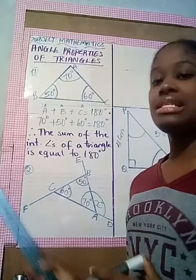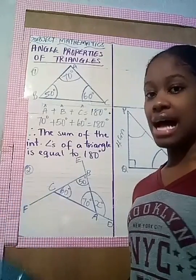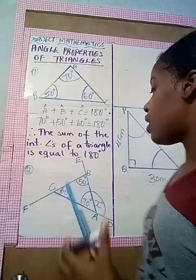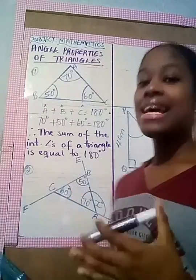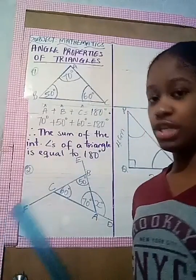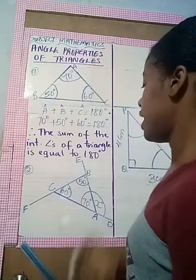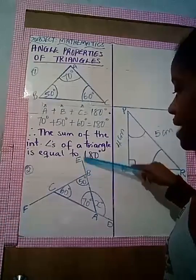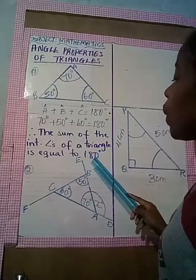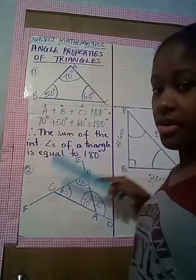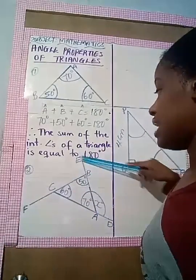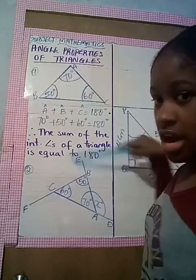The second property we will look at has to do with the exterior angles of a triangle. An exterior angle is formed when we extend any side of a triangle. Here we see three exterior angles being formed, all going in the same direction. If we rotate this triangle, it's going in an anti-clockwise direction.